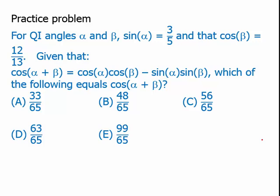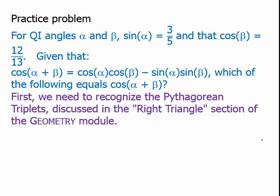For quadrant 1 angles alpha and beta, the sine of alpha is 3 fifths and the cosine of beta is 12 thirteenths. Given that, find the cosine of alpha plus beta. Well, the first thing we need to do is we need to recognize that we're dealing with some very important Pythagorean triplets. And if the idea of Pythagorean triplets are not familiar to you, I'd suggest go back and watch the video on right triangles in the section on geometry.